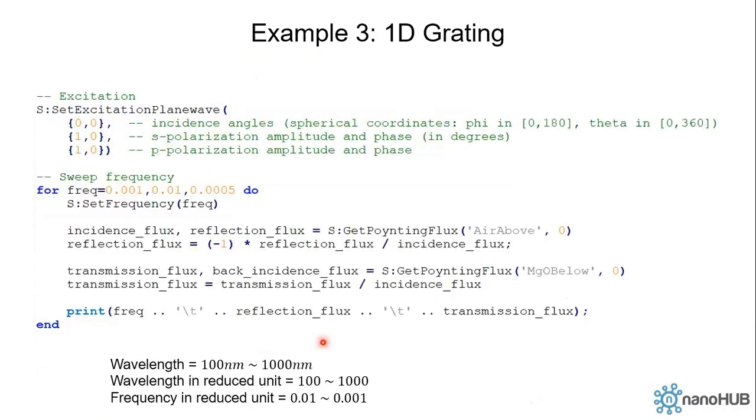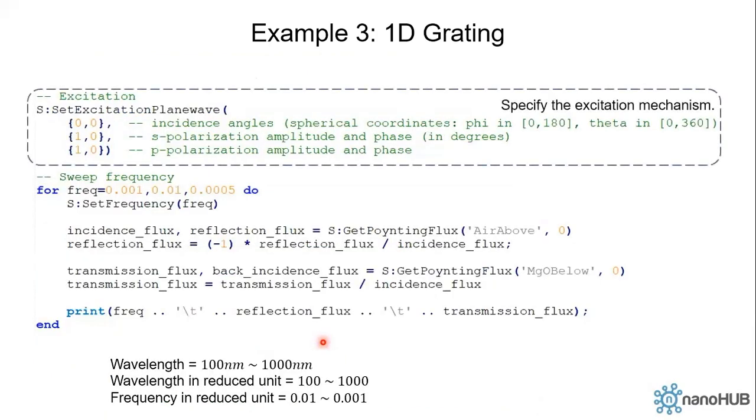Then let's set the excitation plane wave. We want normal incidence, so phi and theta are both zero. We want to mimic natural light, so we set equal amounts of p and s polarization components.